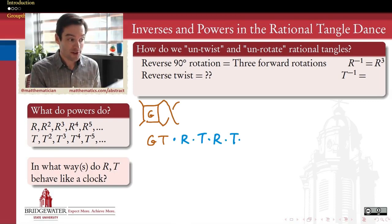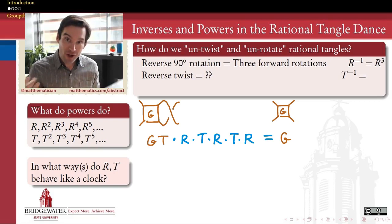in order to get this twist off, we have to rotate, and then twist, and then rotate, and then twist, and then rotate one more time. But by the end of all of that rotating and twisting, we've gotten our original tangle G back.